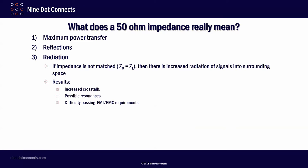For radiation, if the impedance is not matched, and we have a common term here, Z0, which is used for the characteristic impedance, if it does not equal the load impedance, then there will be increased radiation of signals into surrounding space. This results typically in increased crosstalk, even possible resonances. It also creates difficulty passing EMI and EMC requirements. So, if you've got a product that you have to get tested to meet FCC guidelines, this is one of the things that can help you to pass or will cause you to fail, depending upon how well the transmission line is matched to your load.